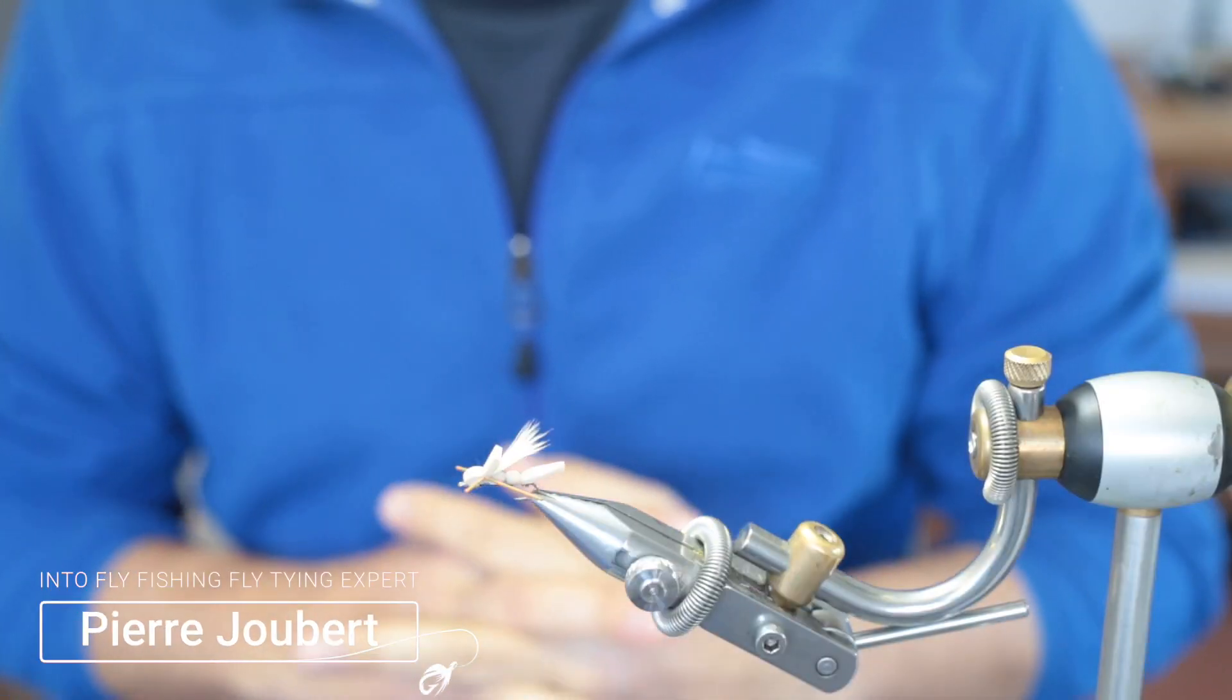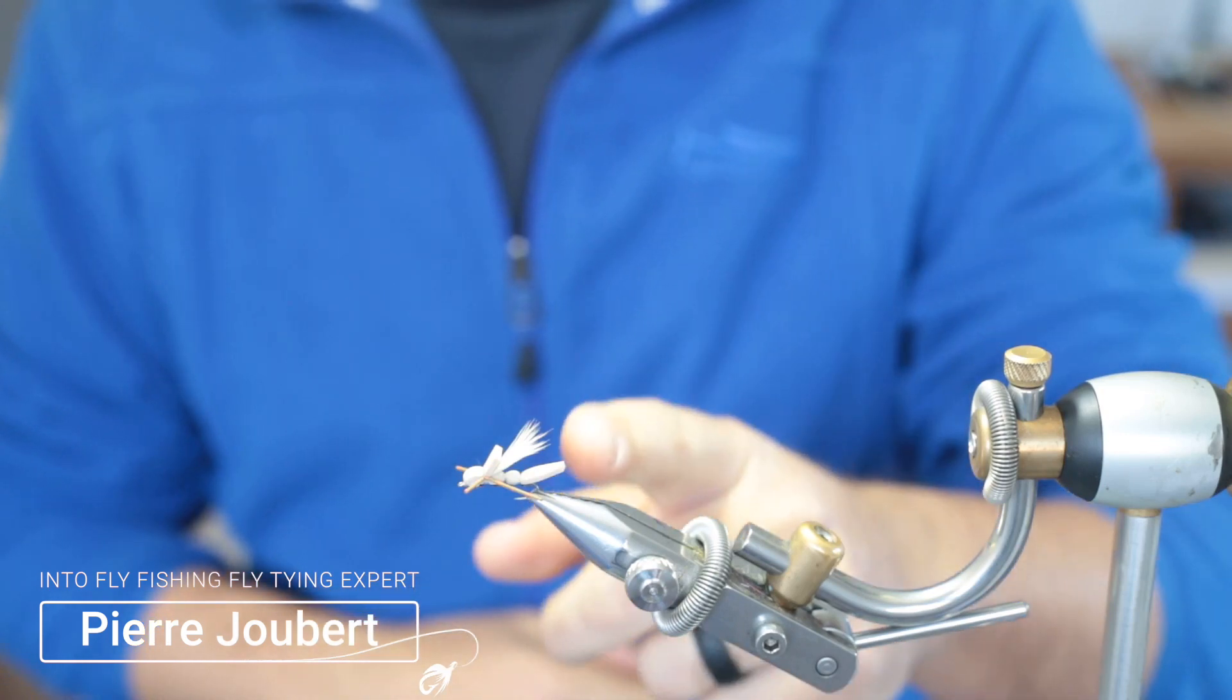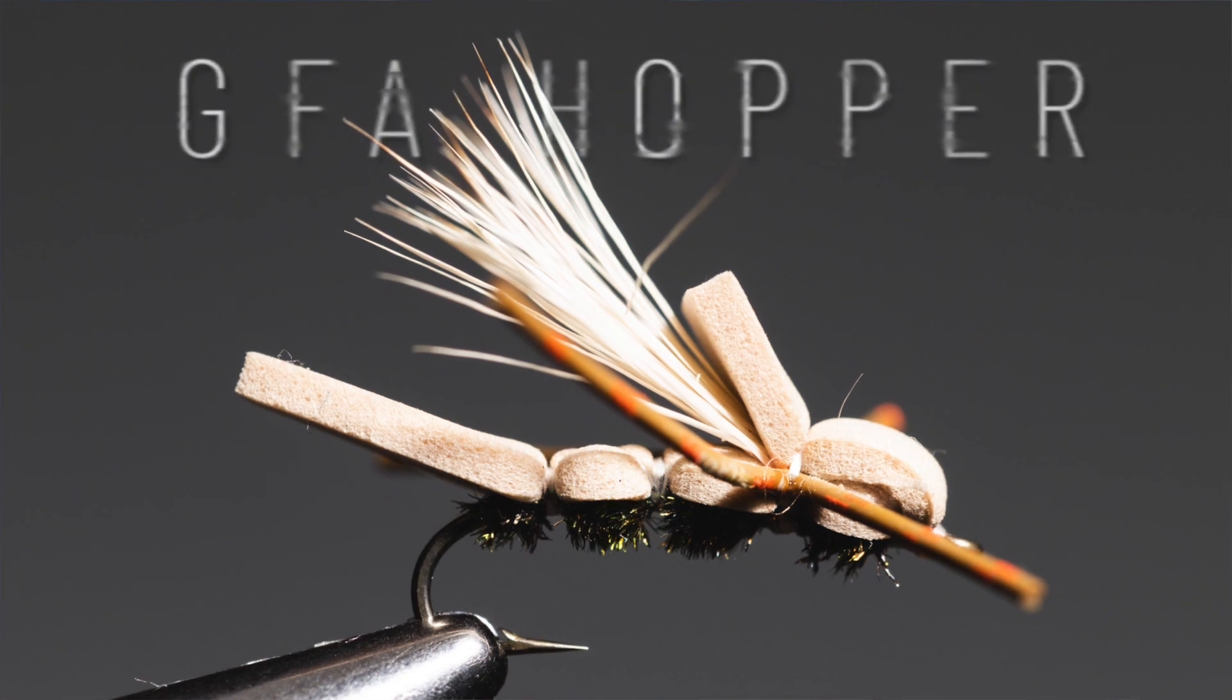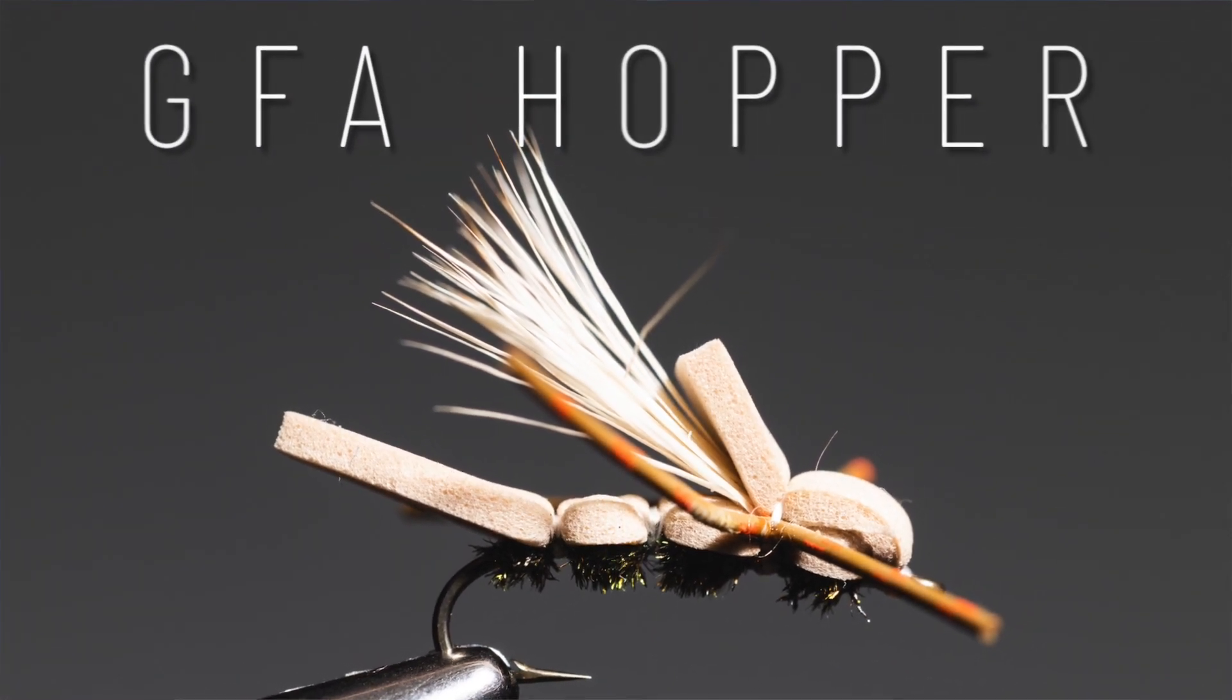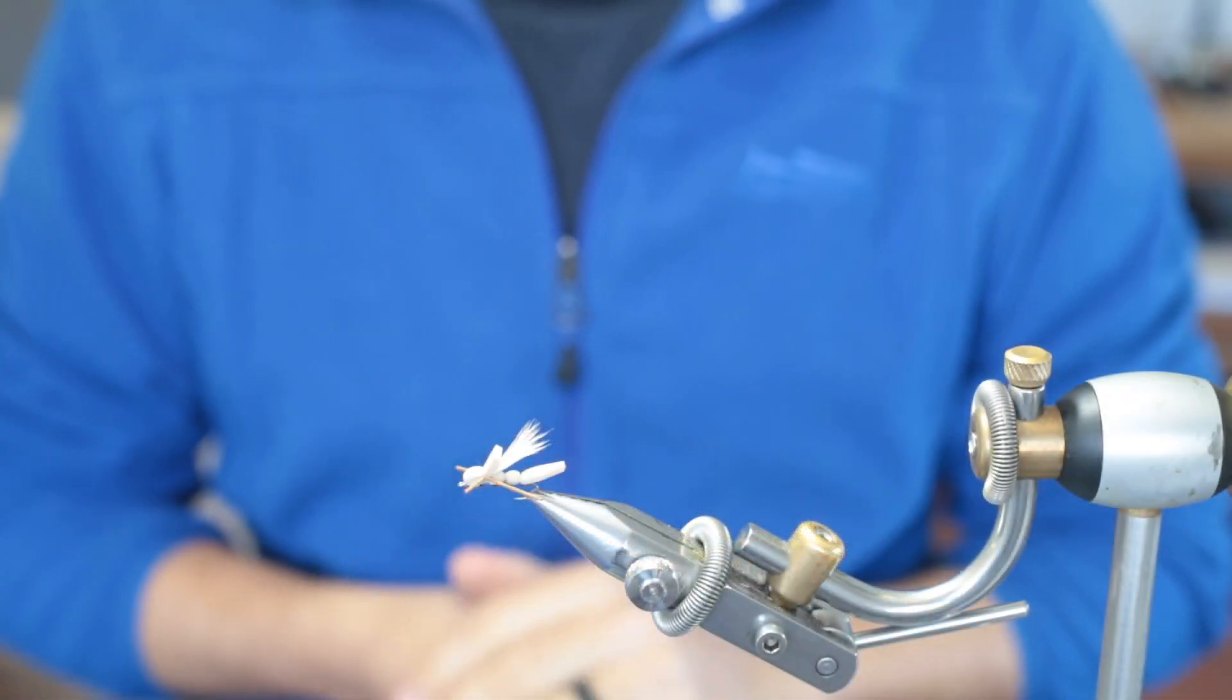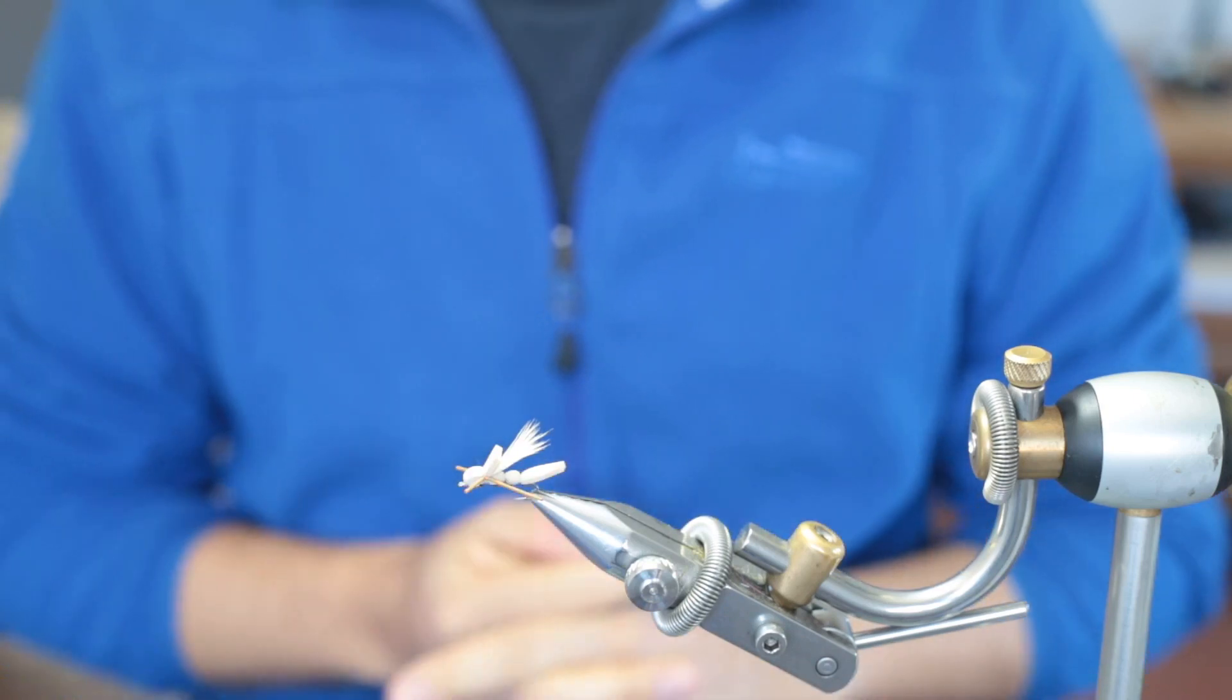Hey guys, welcome to Intro Fly Fishing. My name is Pierre Hubert and today we're going to tie a GFA hopper. GFA stands for General Foam Attractor. It's a very quick hopper pattern to tie. If you've tied other hopper patterns you'll know that it takes some time. This is very quick and just as effective as any other hopper pattern.